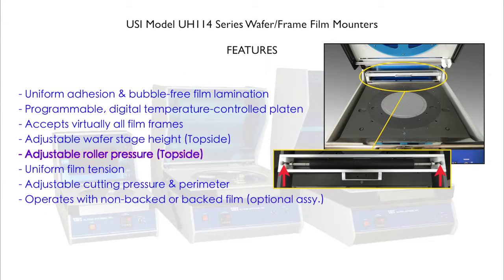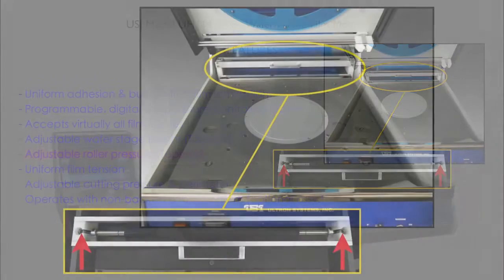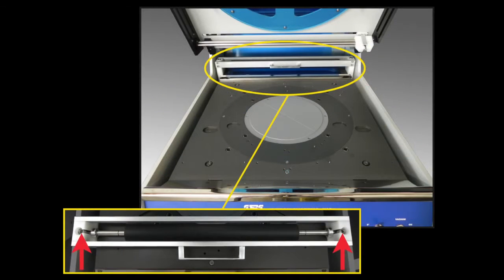Adjustable roller pressure. To accommodate various wafer fragilities and varying process requirements, the spring-loaded roller pressure is also easily adjusted from the top side of the units. This allows quick and immediate changes on the fly.